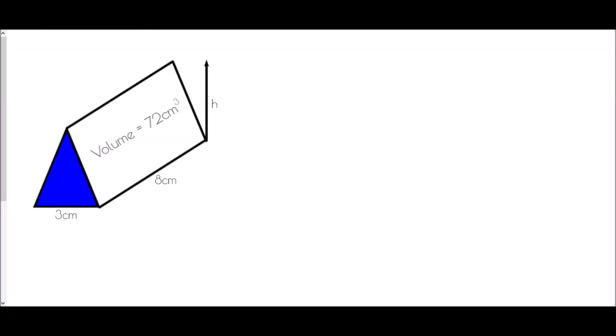We're going to end with a couple of questions where we've already been told the volume, and we're asked to find one of the dimensions of the shape. Basically this is a situation where we need to work backwards — almost solving an equation in order to find the answer. So if we think about this shape, the cross section is a triangle. The area of a triangle would be a half times the base — which is three — times the height, giving the area of the cross section. But then that has been multiplied by eight in order to get the volume.